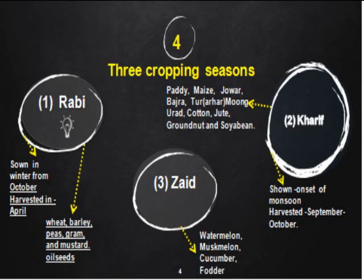Wheat is a Rabi crop. Kharif crops are grown with the onset of monsoon and are harvested in the winter season — they are sown during the summer season. The important crops during this season are paddy, maize, jowar, bajra, tur, moong, urad, cotton, jute, groundnut, and soybean. Basically pulses and fodder crops are grown during this season.